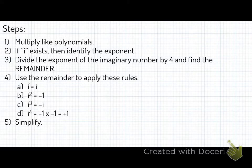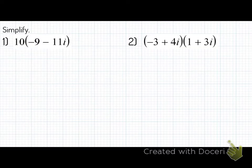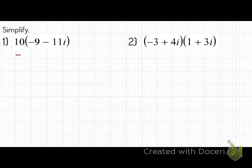You should have paused the video and written these down, so we're going to move on. Here we go — numbers 1 and 2. I know this is freaking out. Just pretend i is just like any normal variable. So number 1, we got 10 times the quantity of negative 9 minus 11i.